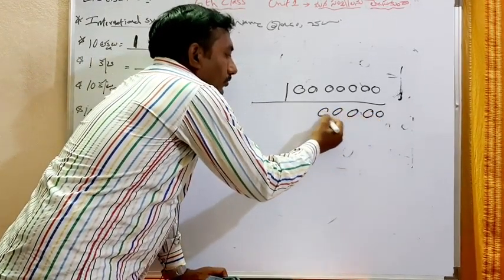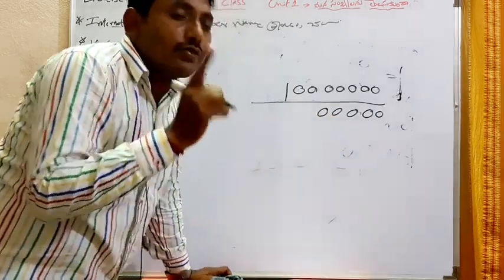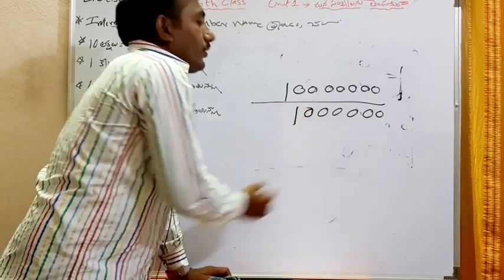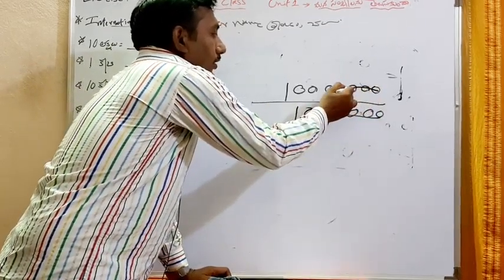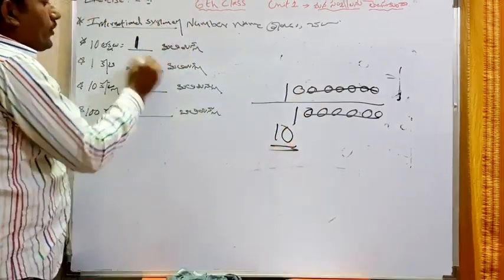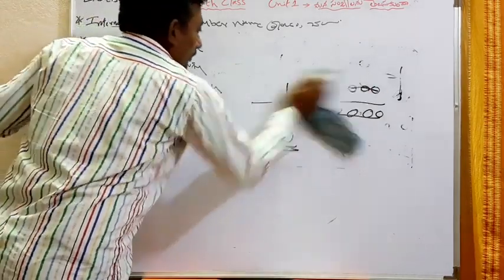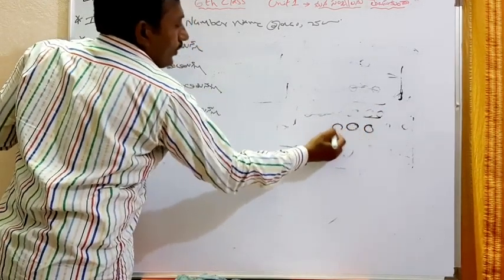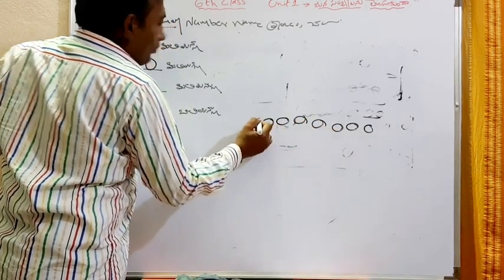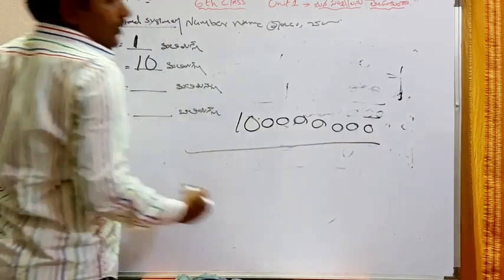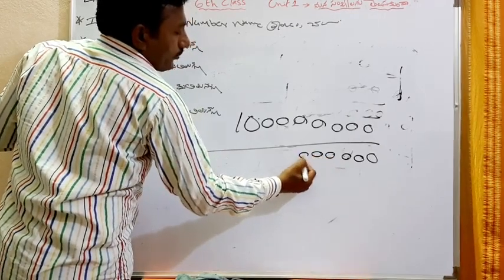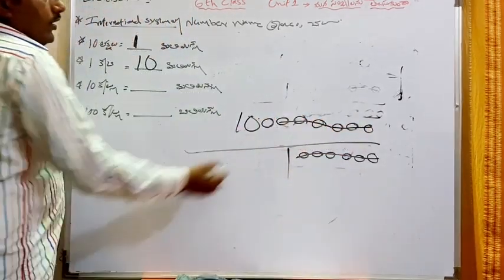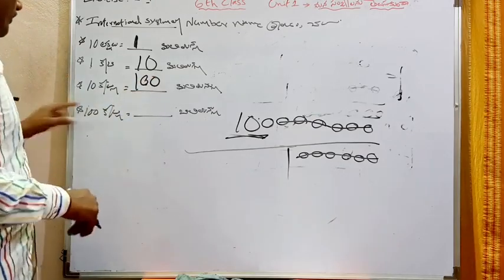One, ten, ten, ten, ten, a million. Six zeros, six zeros cancelled. What is it? Ten million. Next one, 10 million. One, ten, thousand, ten thousand, hundred thousand, million. It's not 10, here there's six zeros. Here is six zeros canceling. What's that? 100 million. In 10 it's 100 million. Here is a billion.